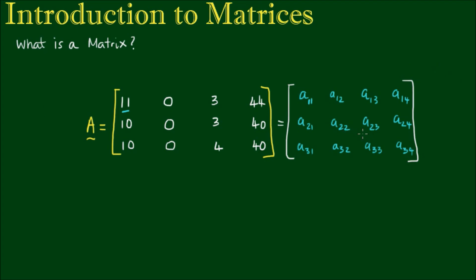This is useful because if we wanted to find out what the value of the element a_23 is, we can simply refer to the second row and then the third column to find the entry which is equal to 3.